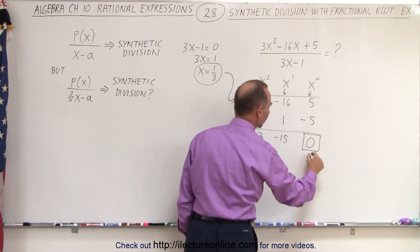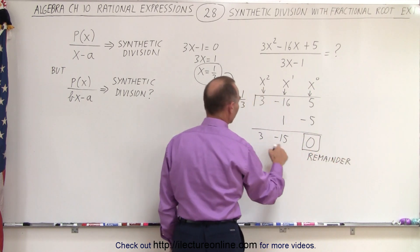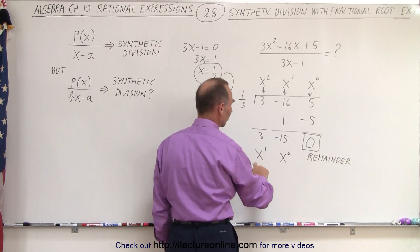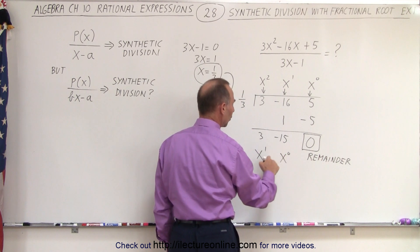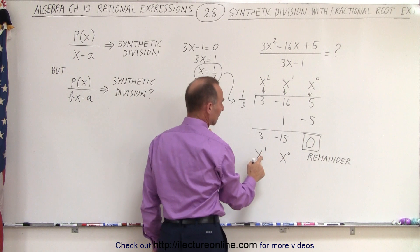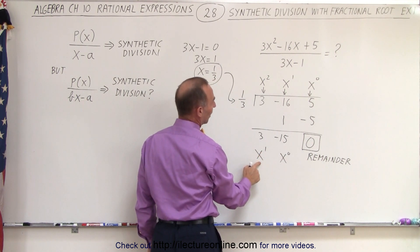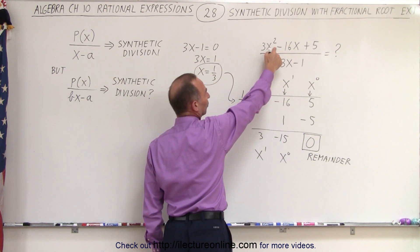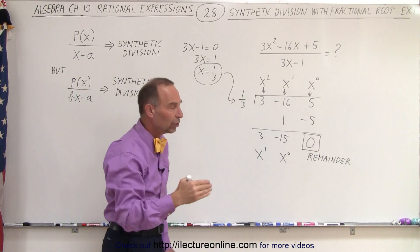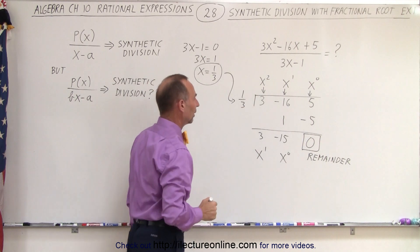Notice that this here is the remainder. And these then represent x to the first power and x to the 0 power. Notice that the exponents here is always 1 less than the ones we started with. So in the numerator, we start with x squared, then here in the answer we get x to the first power. If in the numerator we start with x cubed, then over here the first term here would be x squared. It's always 1 less in the exponent than what we started with.